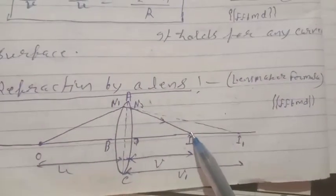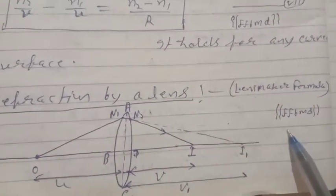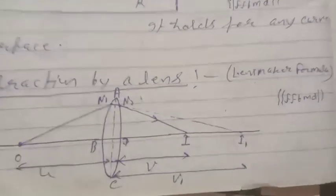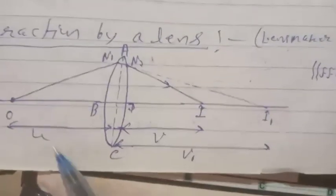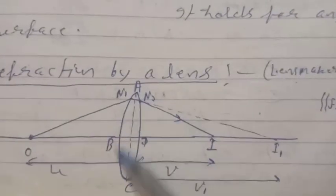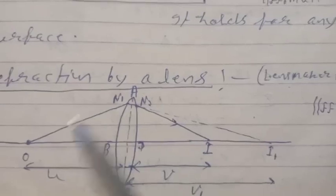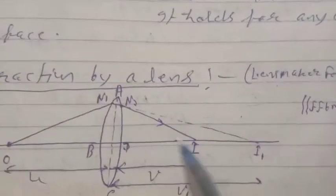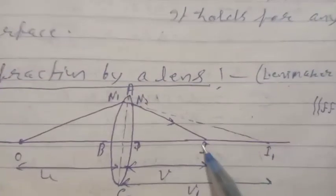Refraction by a lens: a lens is shown with the principal axis and a point object O. The image is formed at i1 due to the first surface. There are two curved surfaces, so two images are formed: first by the curved surface at i1, and the second final image due to the second curved surface. The ray diagram for image formation by the lens is shown, with O as the object.